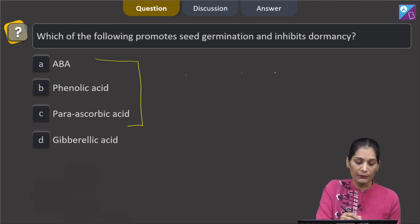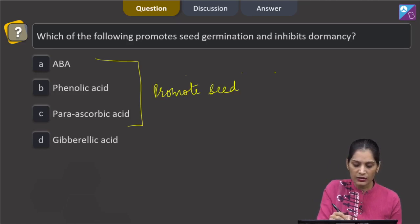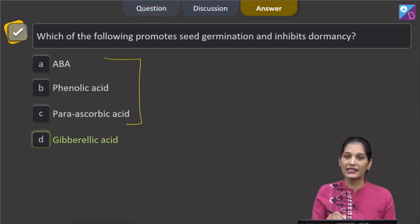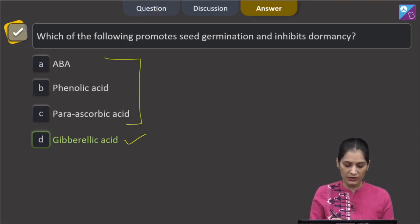So all of them, the above three, they promote seed dormancy. So the correct option for the given question is D, that is gibberellic acid. Let's move to the next question.